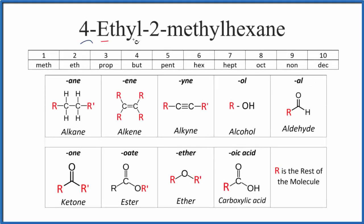Let's write the structure for 4-ethyl-2-methylhexane. The first thing we need to do is recognize the ANE ending. ANE means we have an alkane - all carbon atoms are single-bonded with hydrogen atoms around them.